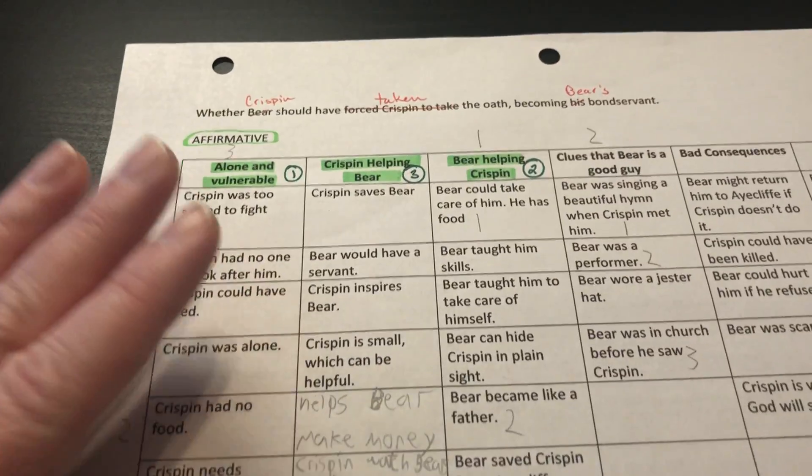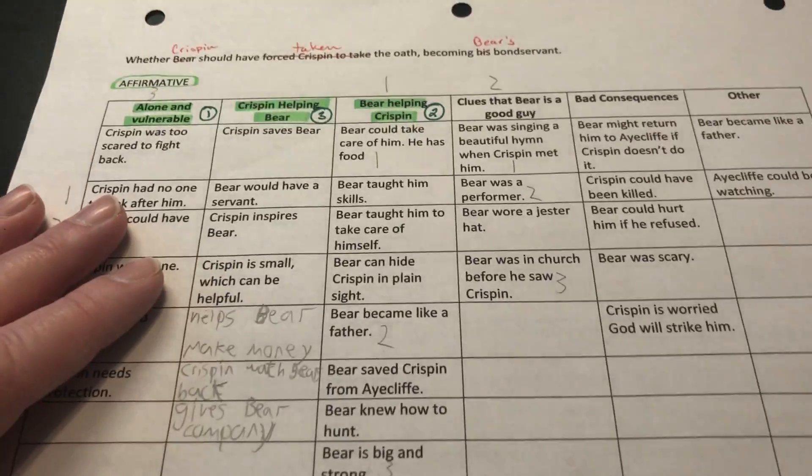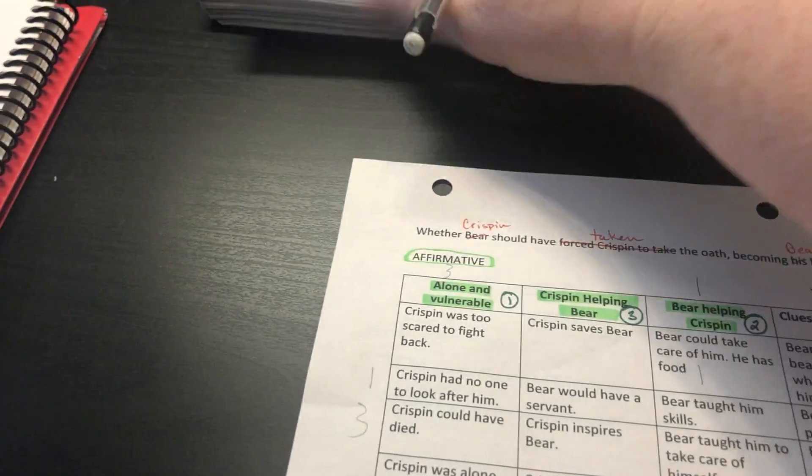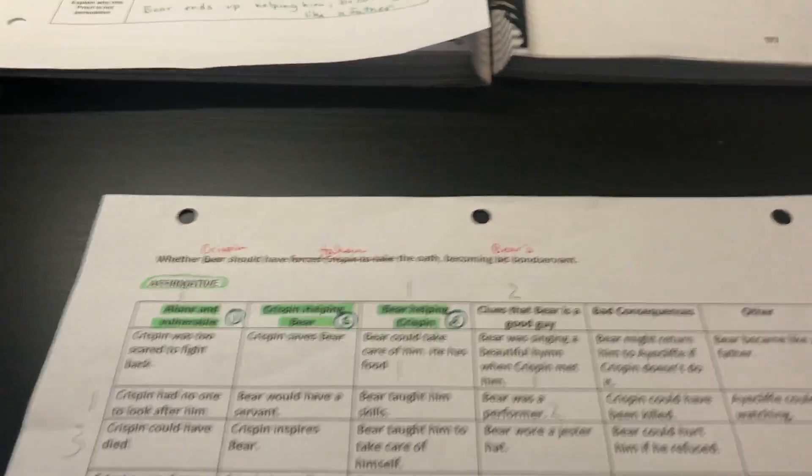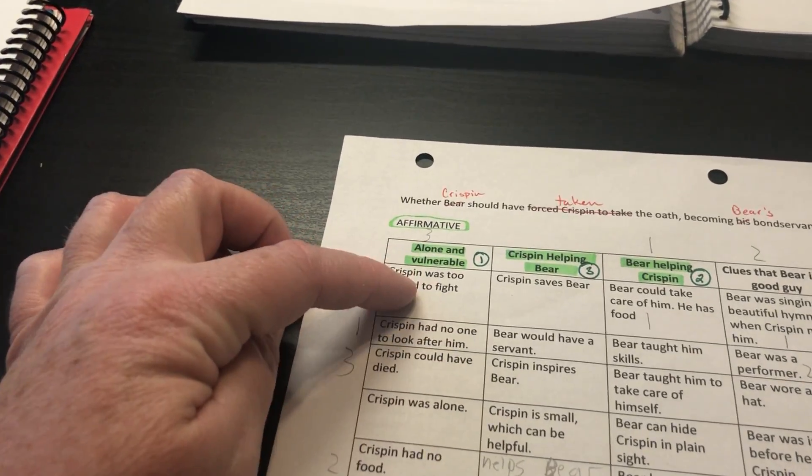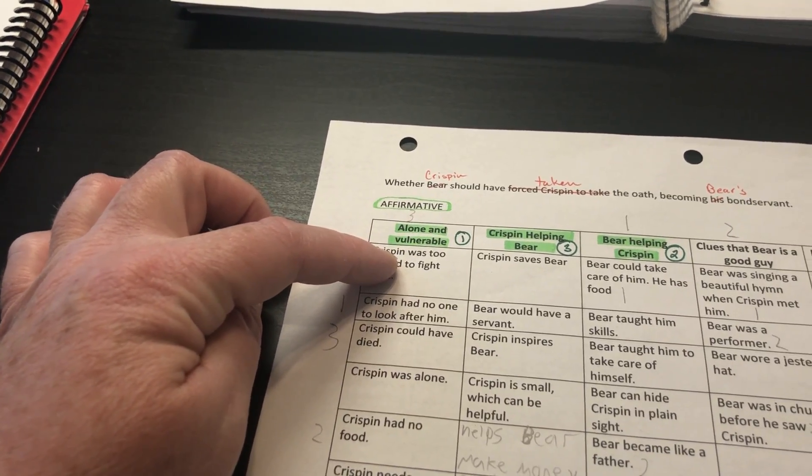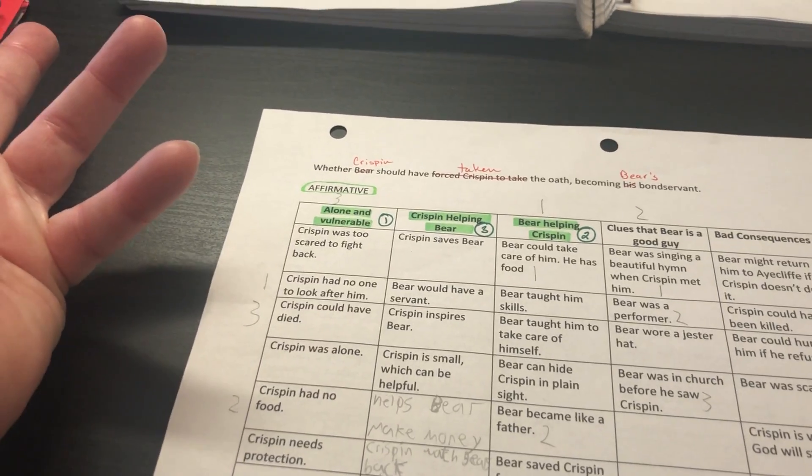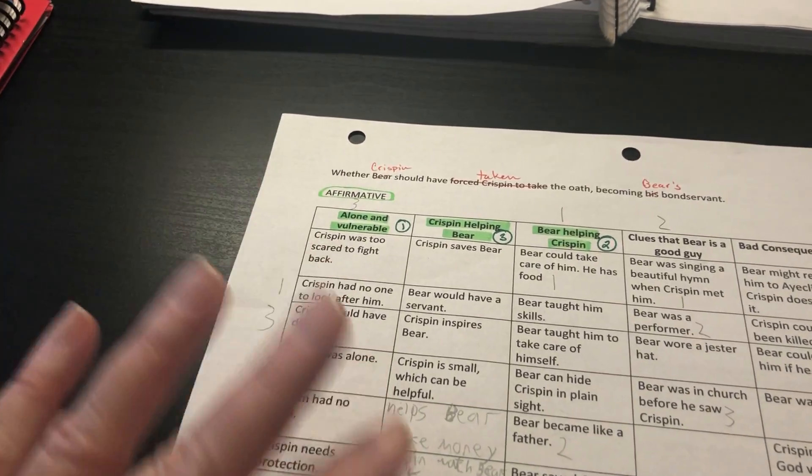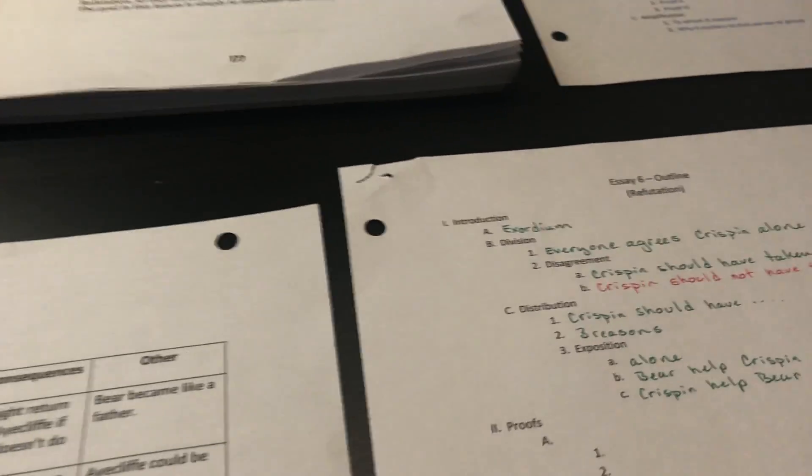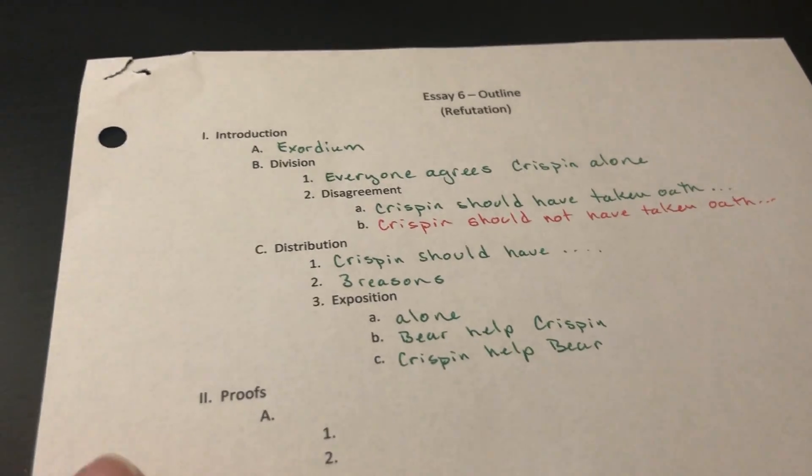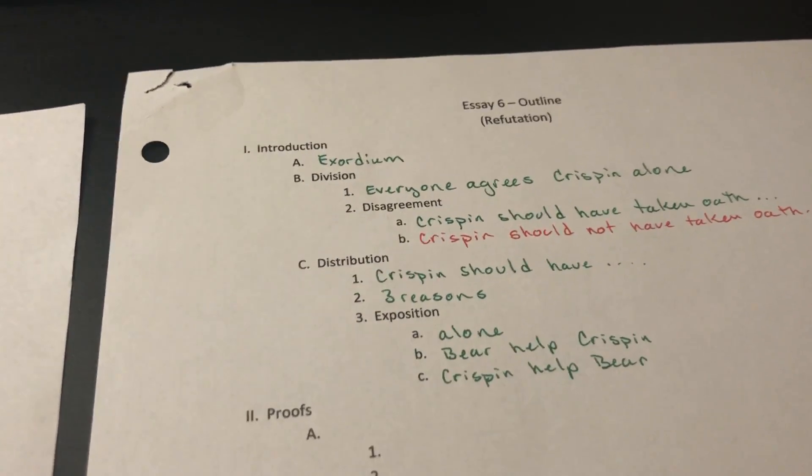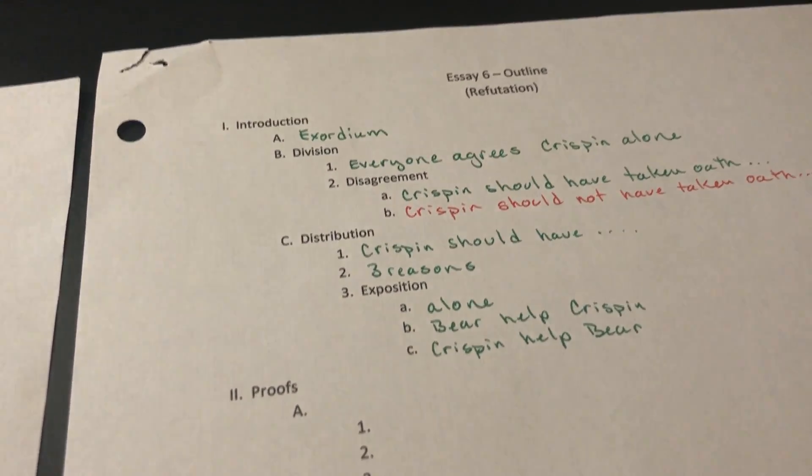So we talked through these three reasons, and we began our outline, which actually looked like this. If these were our three main reasons that Crispin was alone and vulnerable, that Bear could help Crispin, and then Crispin could help Bear. Those were the ones that they voted their best three reasons. So we began to build our outline, and we did this on the whiteboard.